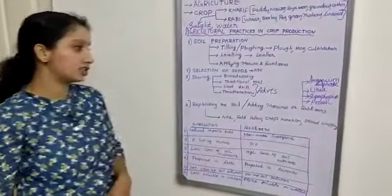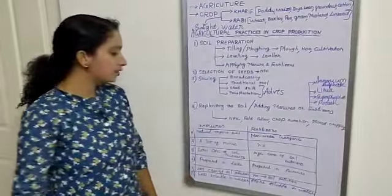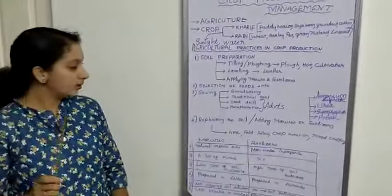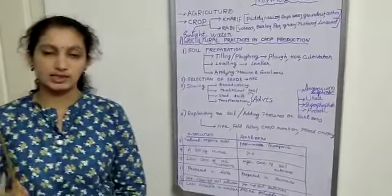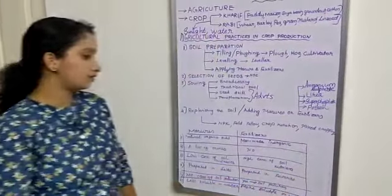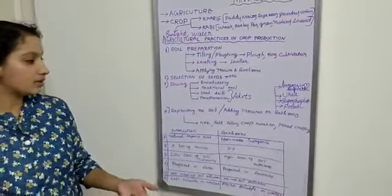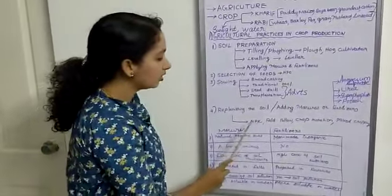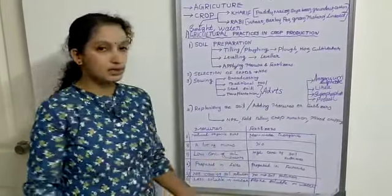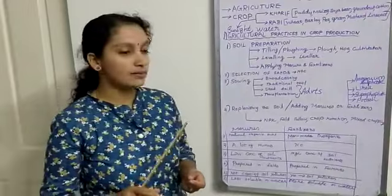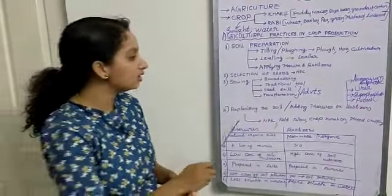Next, moving to the fourth step: replenishing the soil or adding manure or fertilizers. What does replenishing mean? Making the soil get back all the nutrients it owns. This can be done by field fallow method, crop rotation, or mixed cropping. We leave the land for some months so the soil regains all the main nutrients: NPK—nitrogen, phosphorus, and potassium. Soil microorganisms, earthworms, and leguminous plants give nutrients back to the soil.